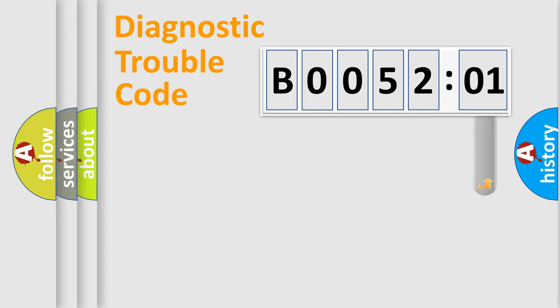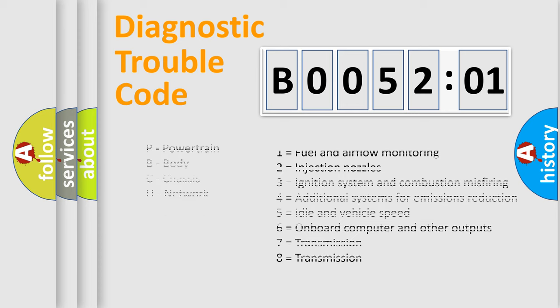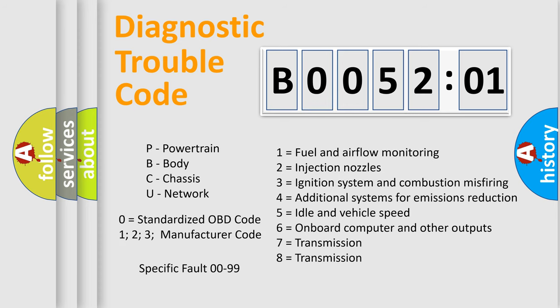The add-on to the error code serves to specify the status in more detail, for example, short to ground. Let's not forget that such a division is valid only if the second character code is expressed by the number zero.